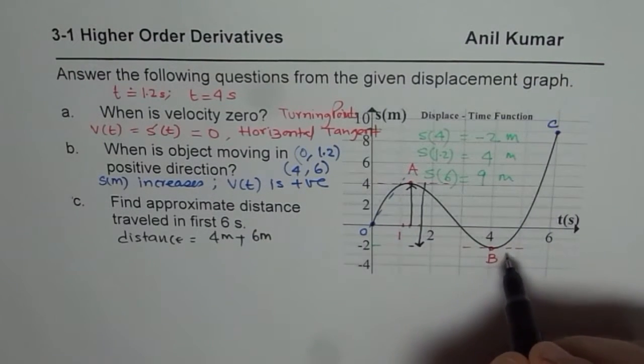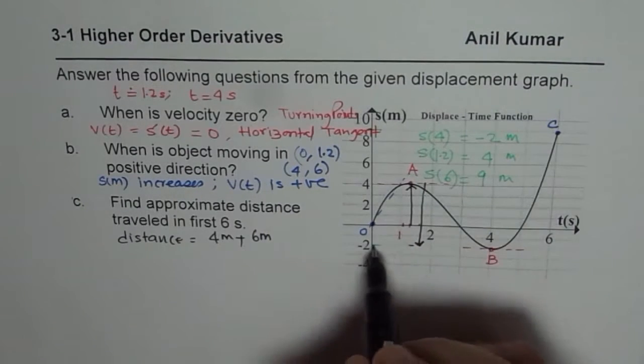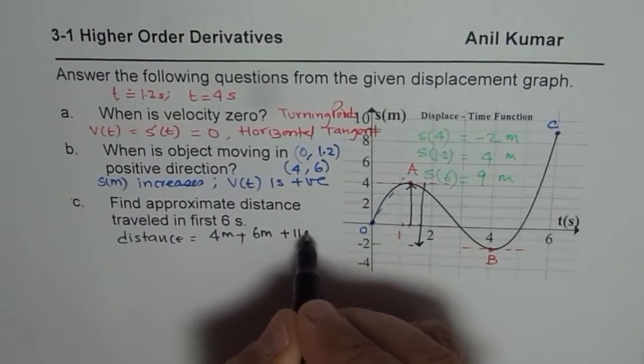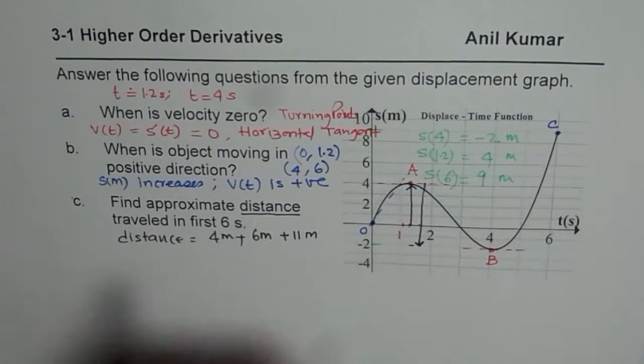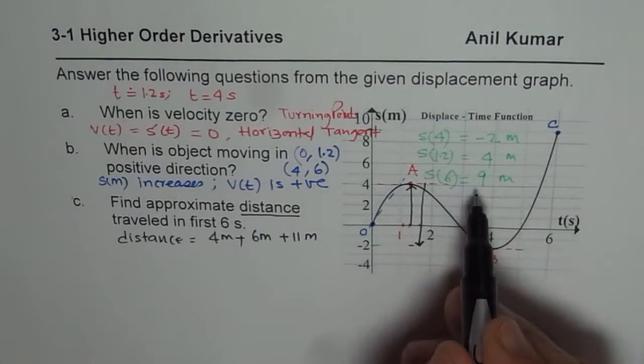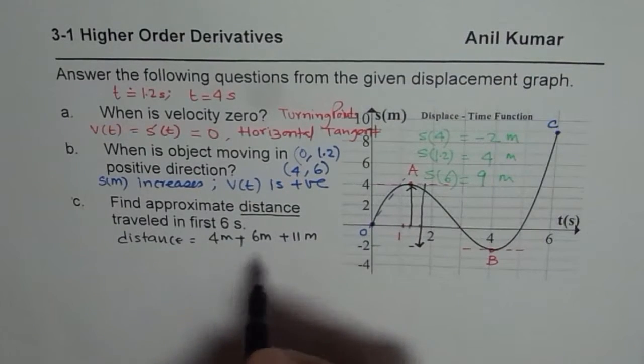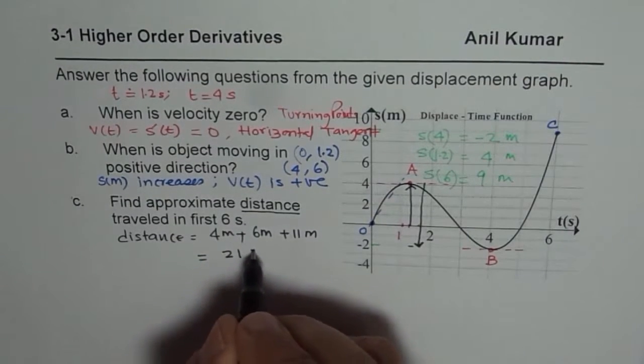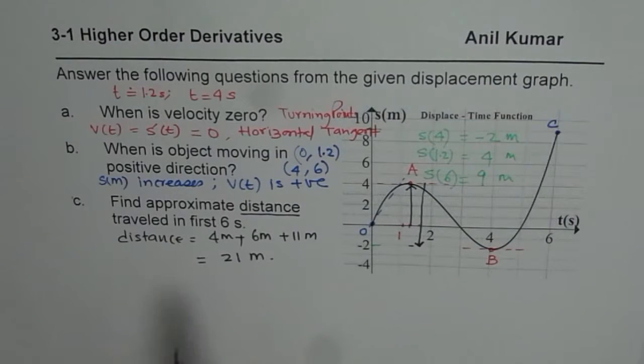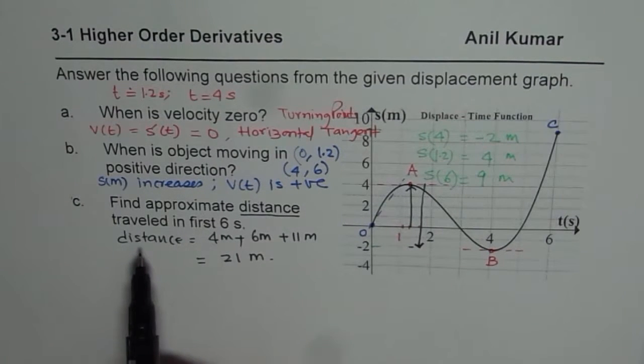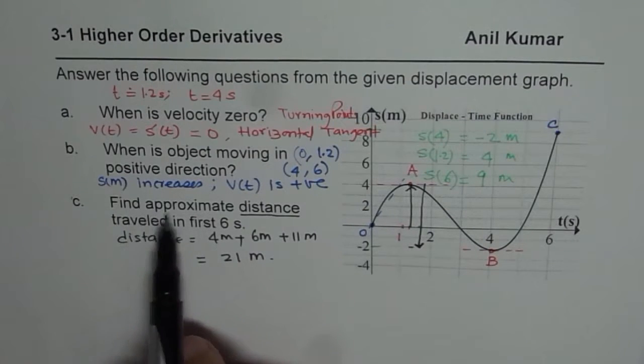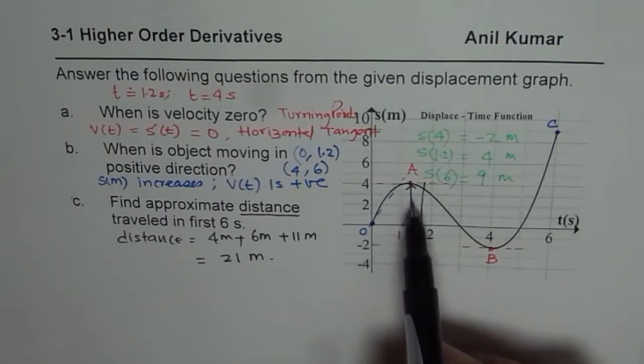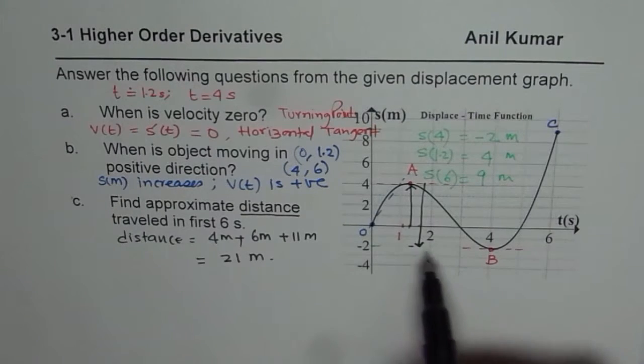And then it moves a distance of it goes from minus 2 to 9. That is 11 meters. So plus 11 meters. Distance is scalar. It is not vector. Displacement is vector. So you have plus and minus sign. But that is the distance. So the distance travelled is 10 plus 11. 21 meters. Do you understand? So that is why this part C is very very critical to understand. When we are saying total distance travelled in first 6 seconds. So whether you go in the positive direction or in the negative direction. It is the distance.